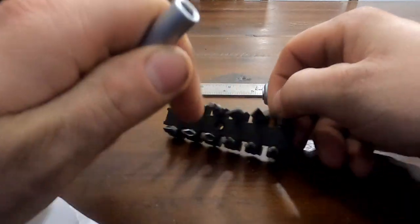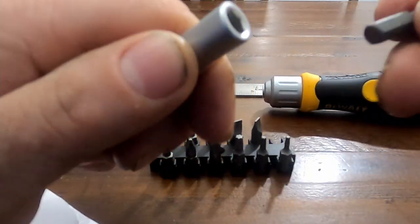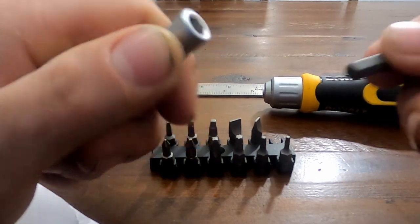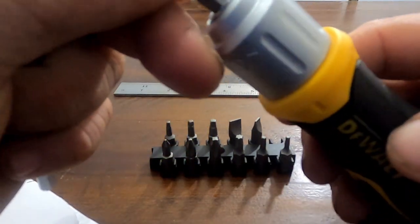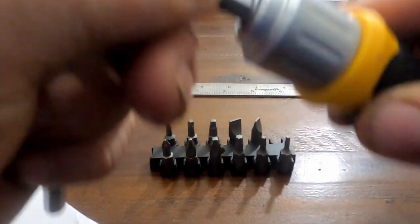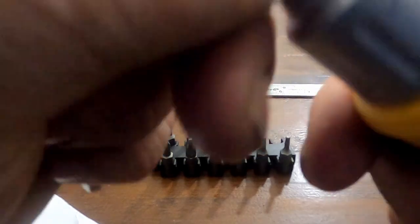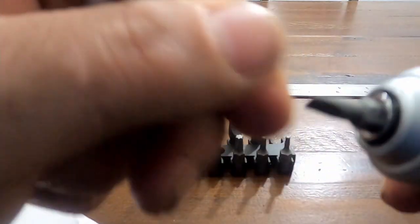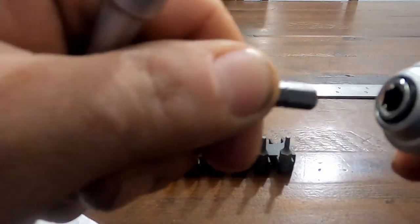I can't say that about the screwdriver handle part. I don't know if there's an actual magnet in there. It just seems to be friction fit, but it holds the bits in there pretty tightly. In fact, sometimes it's a little bit tricky to get the bit out of the screwdriver handle.